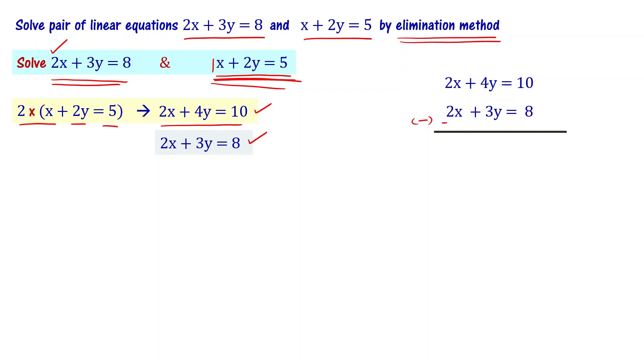We subtract the second equation from the first equation by adding term by term. Plus 2x minus 2x, plus 4y minus 3y. This is 10 minus 8, so y equal to 2.